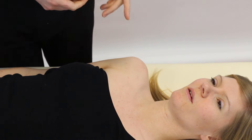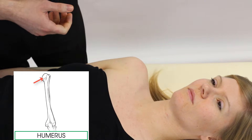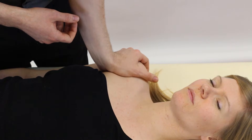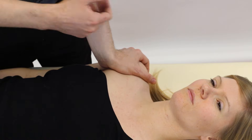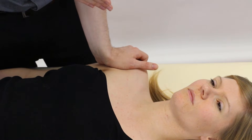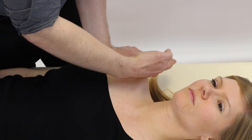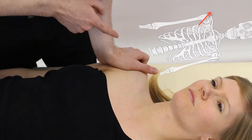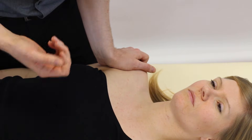Now we'll look at an anterior-posterior glide of the glenohumeral head. Cup your hand laterally around the patient's shoulder, but don't go too far over as you'll just be driving the scapula down rather than gliding the glenohumeral head on the glenoid fossa. Come a bit more lateral. Although this is described as an AP glide, you're actually going to glide slightly diagonally because the surface of the glenoid fossa is angled — pushing directly posteriorly would compress the joint, so angle your pressure accordingly.